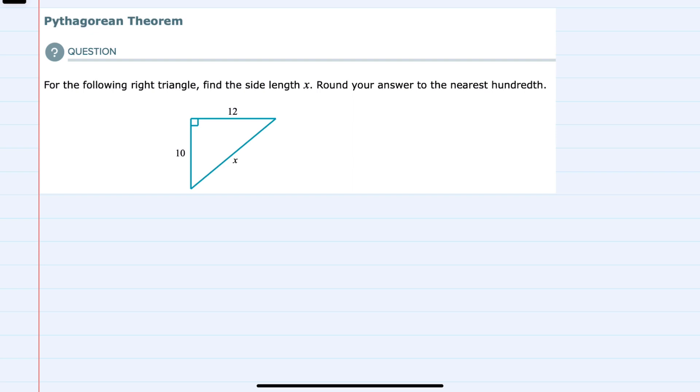The Pythagorean Theorem tells us that a squared plus b squared equals c squared, where a and b are sides of a right triangle, and c is the hypotenuse.